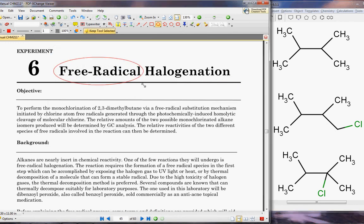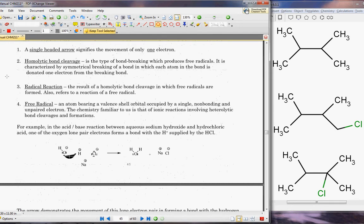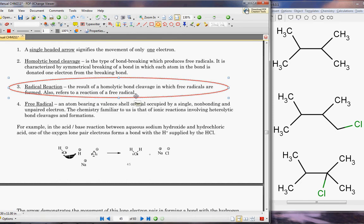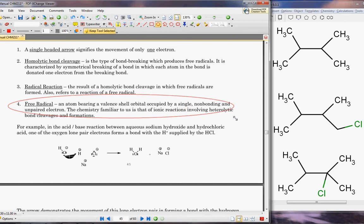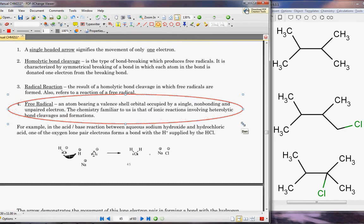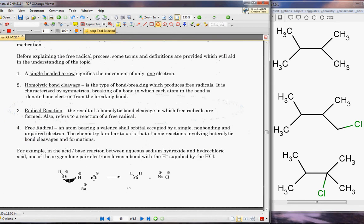So free radical is essentially, you're going to have to get familiar with the word radical. If we go down here, it gives a nice definition. The result of homolytic bond cleavage in which free radicals are formed also refers to the reaction of free radicals. A free radical is an atom bearing a valence shell orbital occupied by a single non-bonding unpaired electron, highly reactive, wanting to stabilize.